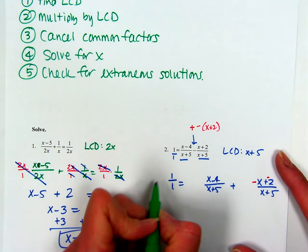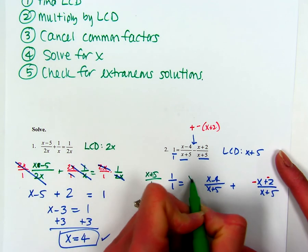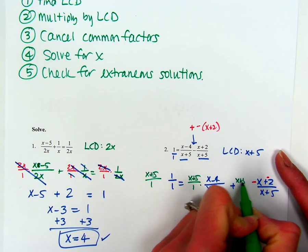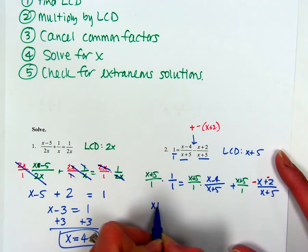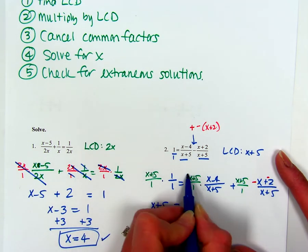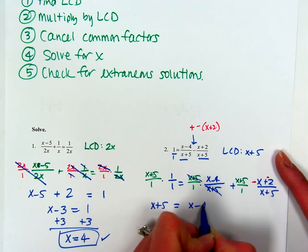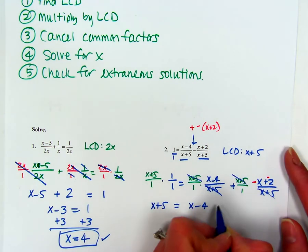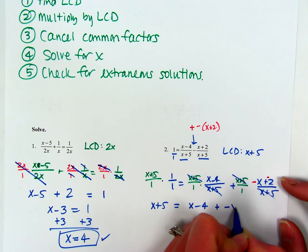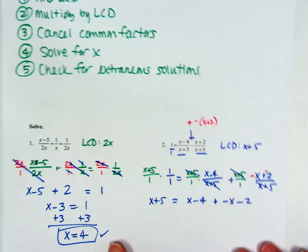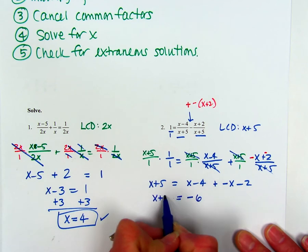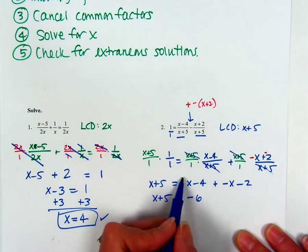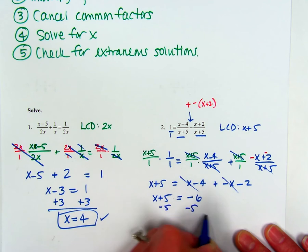So now I'm going to put in my LCD. X plus 5 over 1, X plus 5 over 1, and X plus 5 over 1. Now most of these will cancel nicely, so I have just X plus 5. Here my X plus 5 is canceled, so I'm left with just X minus 4. Here my X plus 5 is canceled. Now here I'm left with plus negative X minus 2. All right, so if I add together my like terms, I'm left with just negative 6 over here because the X and the negative X cancel out.